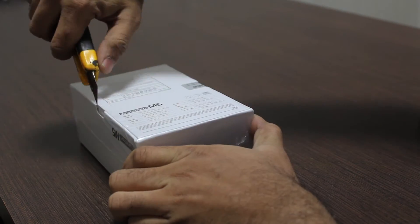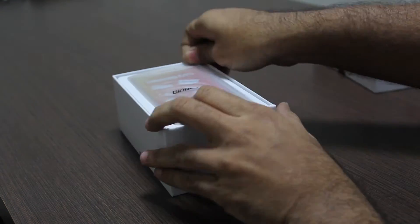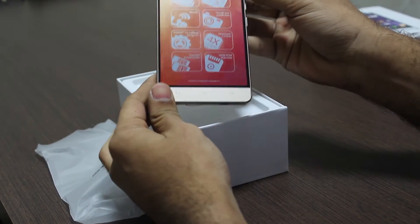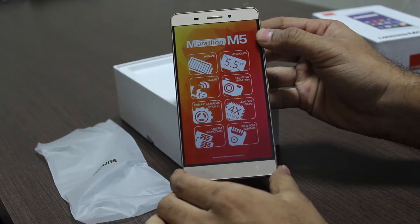Now let's unbox this device and see what all you get in the box. First up, there's the Gionee Marathon M5. All the quick specs are written on top of it just as mentioned on the phone here.